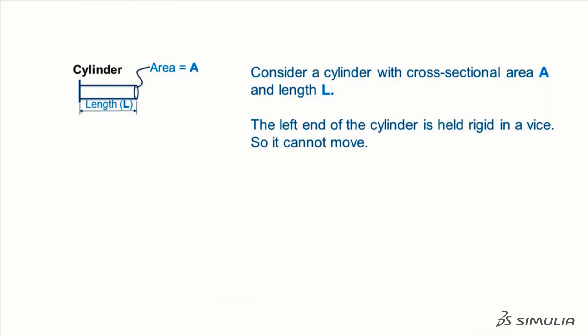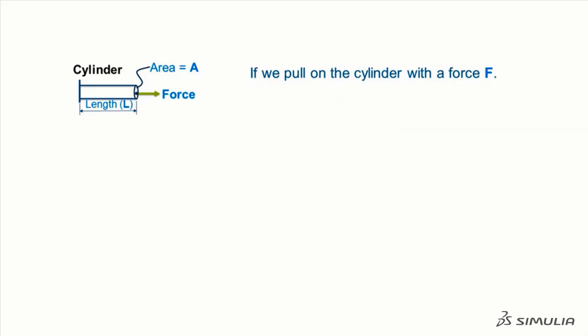Instead of a simple spring, let's consider a cylinder with cross-sectional area A and length L. The left end of the cylinder is held rigid in a vise, so it cannot move. If we pull on the cylinder with a force F, the cylinder will elongate, and the right end will displace by some amount U.